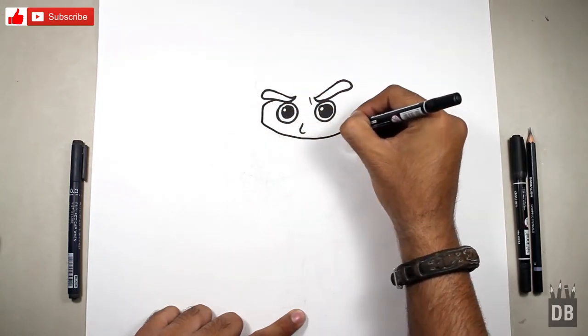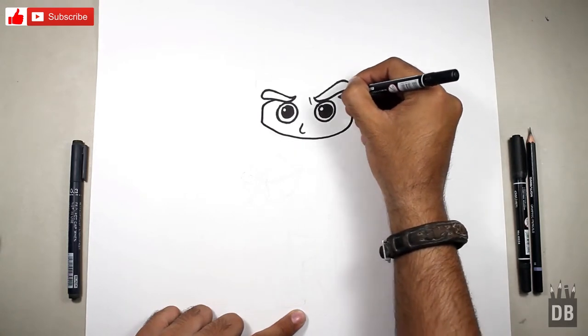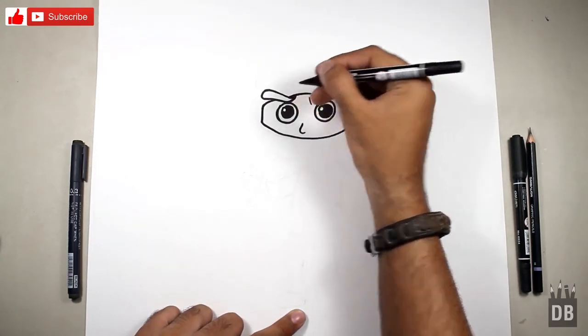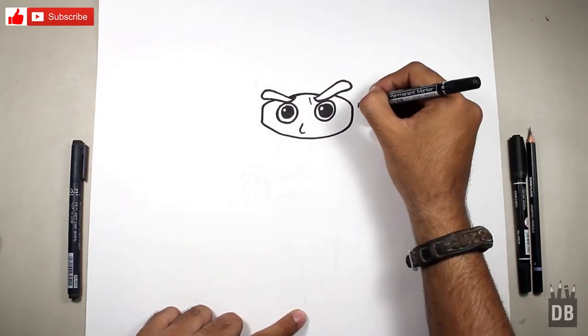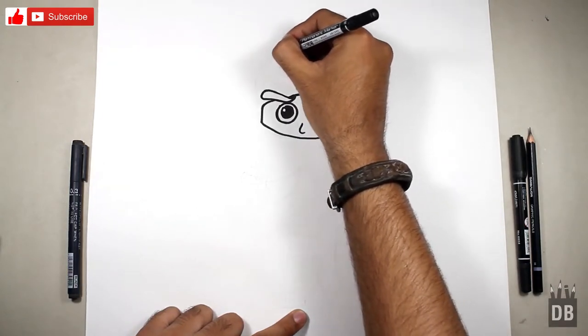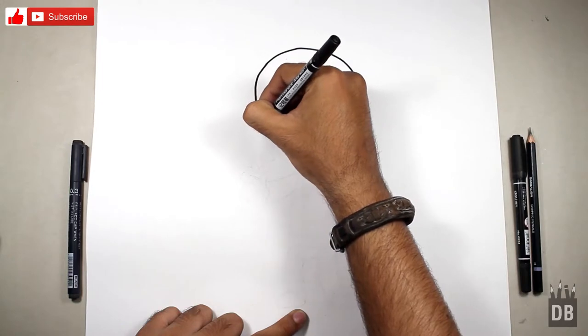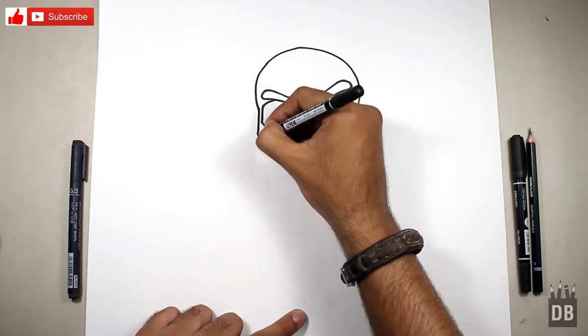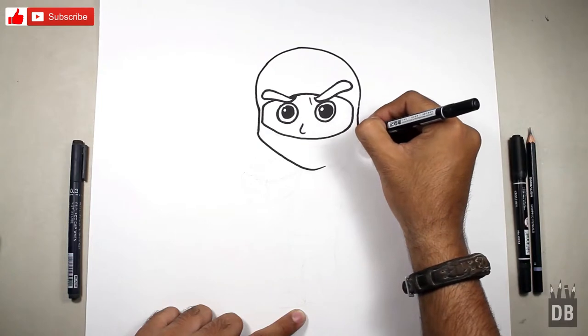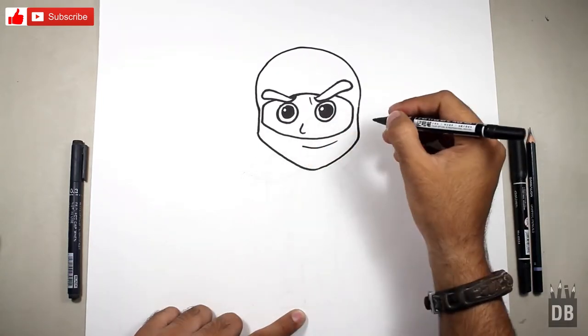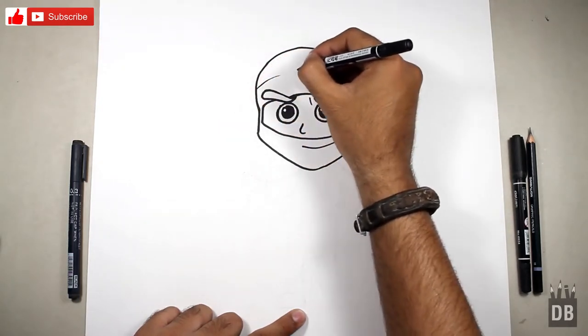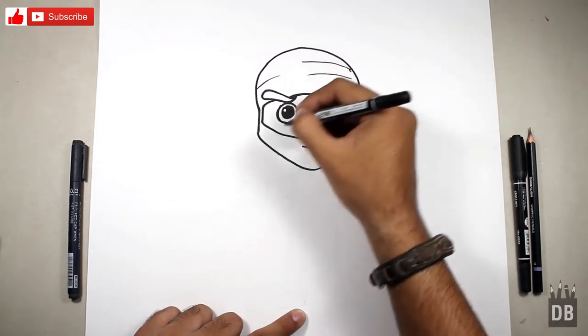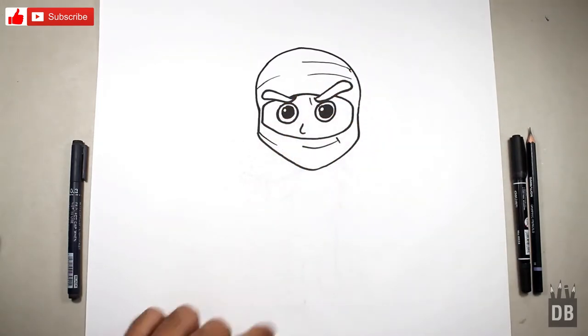Draw the line from here. For the head we are going to make a round with a little edge from the lower line like this. Add the mask curves. Now we are going towards the body.